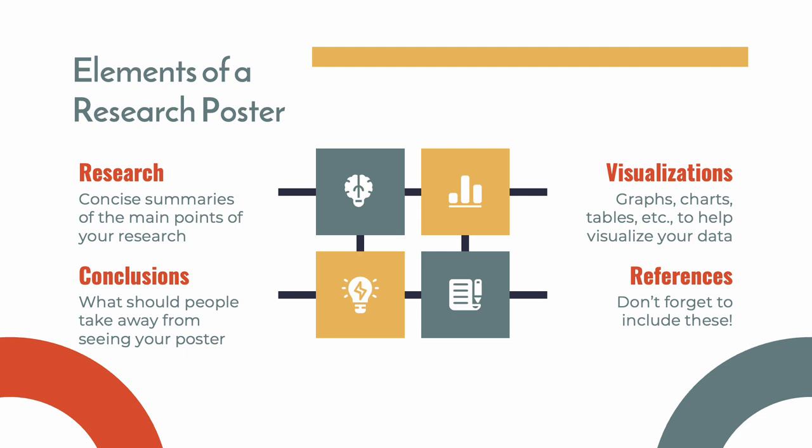There are four main components of a research poster: your research; visualizations, which can be charts, graphs, photos, or illustrations; a conclusion where you state what you want people to take away from your poster; and references to the information you used in your research. This can be journals, books, and websites, or data you have collected yourself.